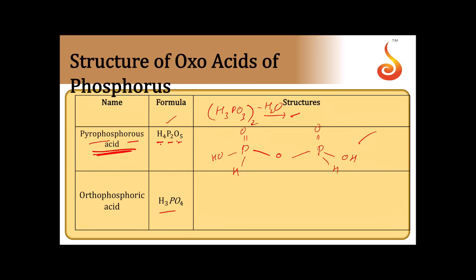Then comes phosphoric acid, also called orthophosphoric acid. Its structure has one P=O bond and three P-OH groups. Because of the three P-OH groups it is tribasic in nature and forms three series of salts.